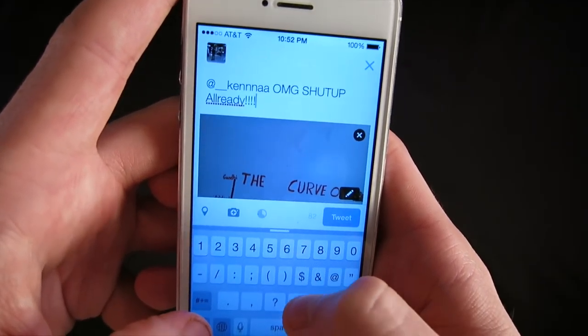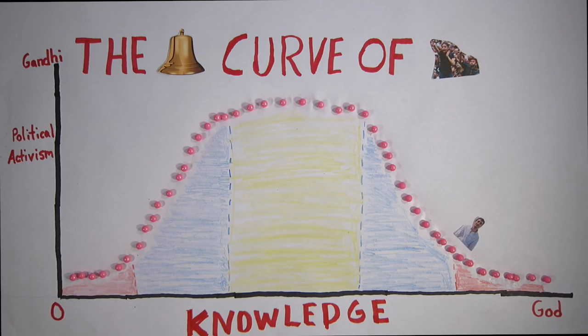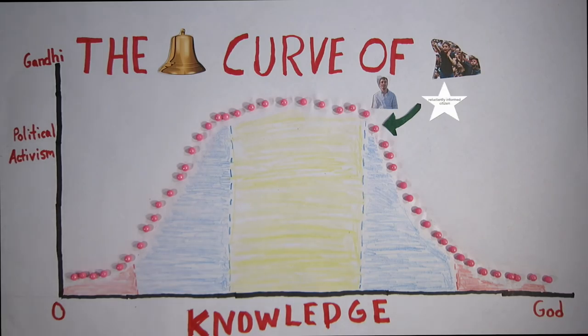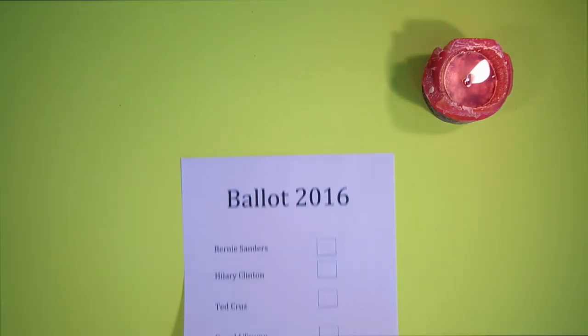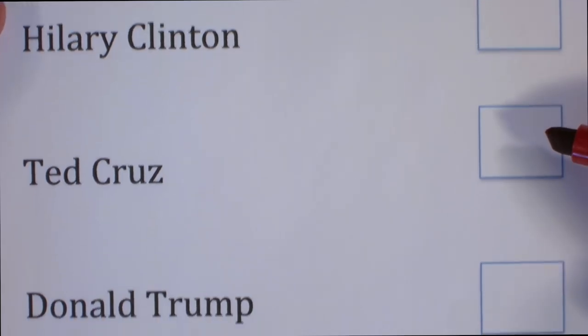Rather than lauding over your knowledge of the political minutia, I think it's healthier to reverse a little bit — to remain what I call a reluctantly informed citizen, right about here. I know it's sacrilege, but sometimes it's helpful not to learn everything about a candidate, particularly if it'll prevent cynicism. I don't vote because I believe in either candidate — I vote on the principle of voting.